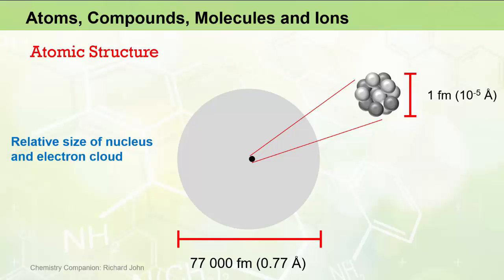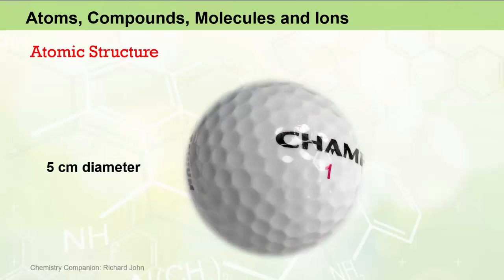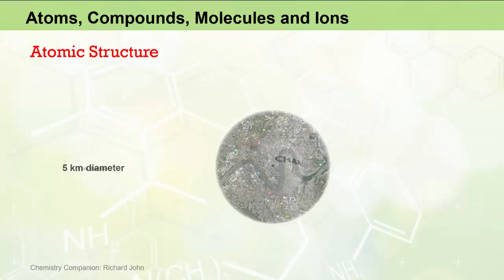Typically the size of an atom is about 100,000 times bigger than the size of the nucleus for most atoms. To put this into perspective, if the size of a nucleus was represented by a 5 cm golf ball, the diameter of an atom would be about 5 kilometers.